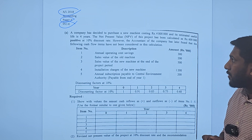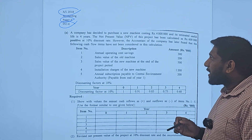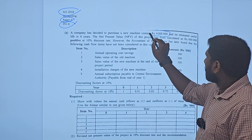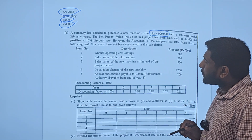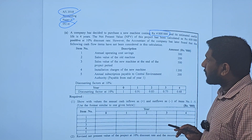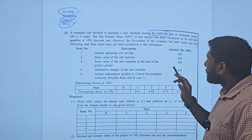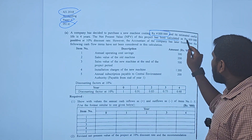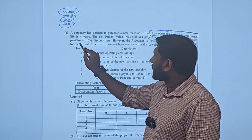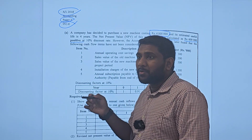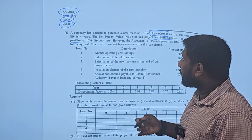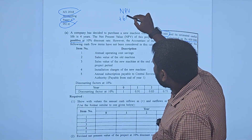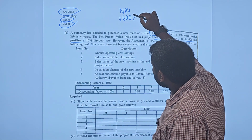Now let's go through the scenario. A company has decided to purchase a new machine costing 4 million, and its estimated useful life is 4 years. The NPV of this project has already been calculated — it is 600,000 positive.